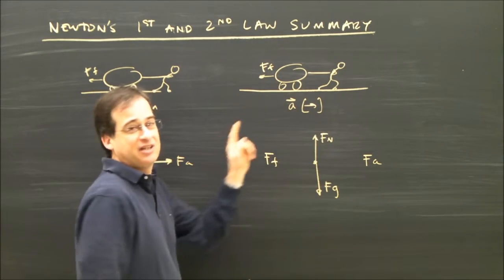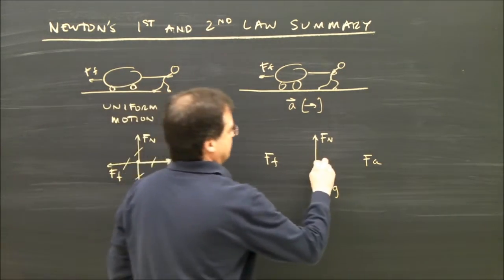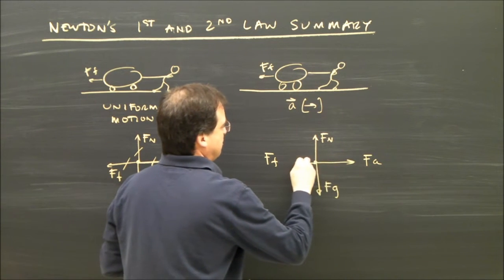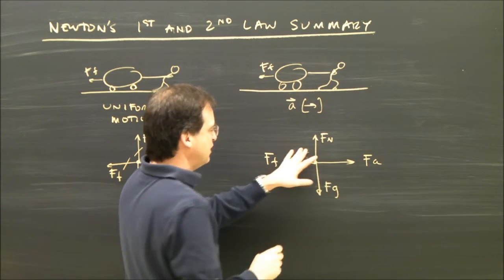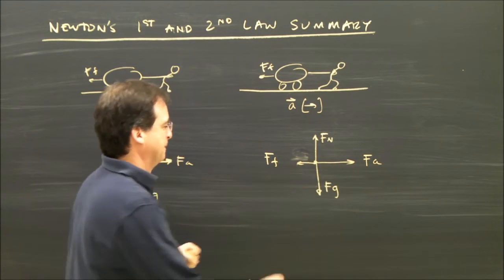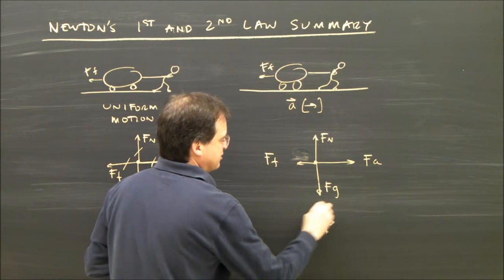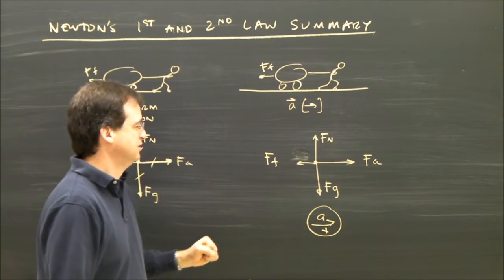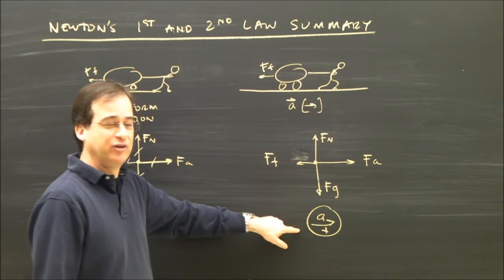It's accelerating to the right, so I must have more force to the right than left. So this one should be bigger than that. This is my applied force. This is my friction. My applied is bigger. Since it's accelerating, I label it as accelerating to the right. This one's bigger than that. That agrees with this.